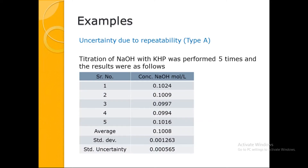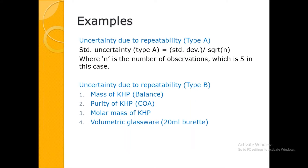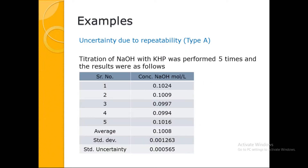We titrate NaOH with KHP multiple times. Many labs make one solution and titrate five times — that is not correct. What you must do is make five different solutions and conduct five entirely different experiments. The average is 0.1 mol/L. We find out the standard deviation, then the standard uncertainty using the formula: standard deviation divided by root n — in this case root 5, because we have taken five observations. Our standard uncertainty is 0.000565.